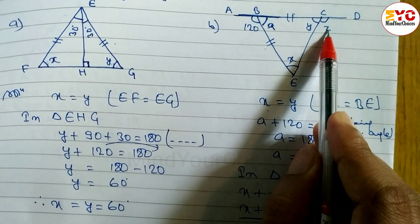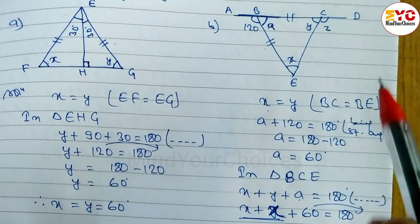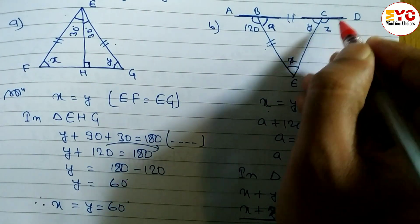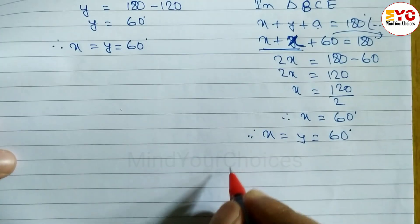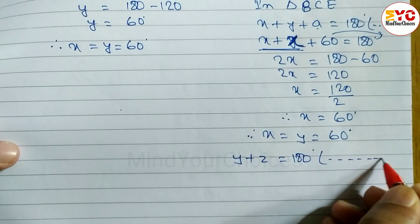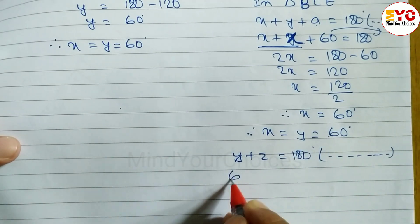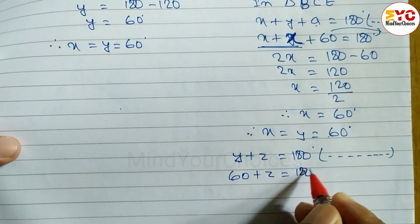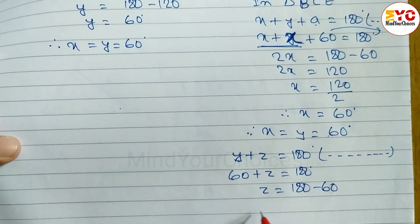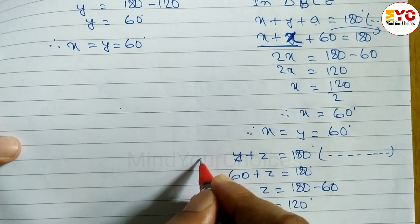Now we have to find out the value of z also. Y plus z is equal to 180 degrees — reason: being a straight angle or straight line. Substituting y equal to 60: 60 plus z is equal to 180 degrees. So z is equal to 180 minus 60. Therefore the value of z is equal to 120 degrees.